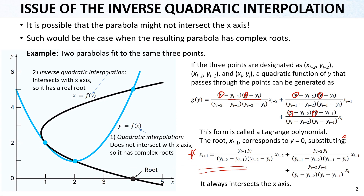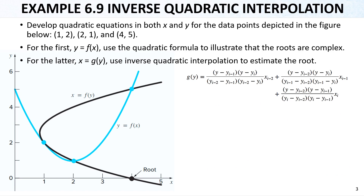In this slide we have an example for the inverse quadratic interpolation method. We check both a real root prediction and a complex root case using the regular function. The first three initial guesses are given. First, we check the y = f(x) function — the blue curve — which doesn't intersect the x-axis, and we use the quadratic formula to show that the roots are complex. Then, for the second case, we use x = g(y) — the black function — and find the root using inverse quadratic interpolation.